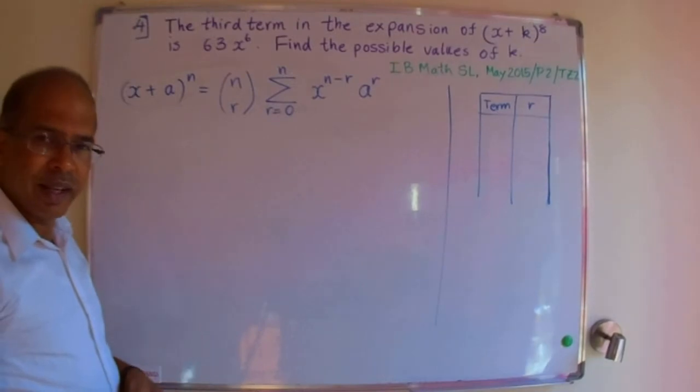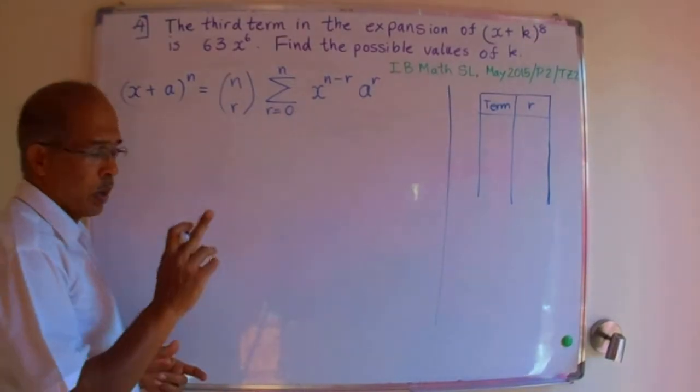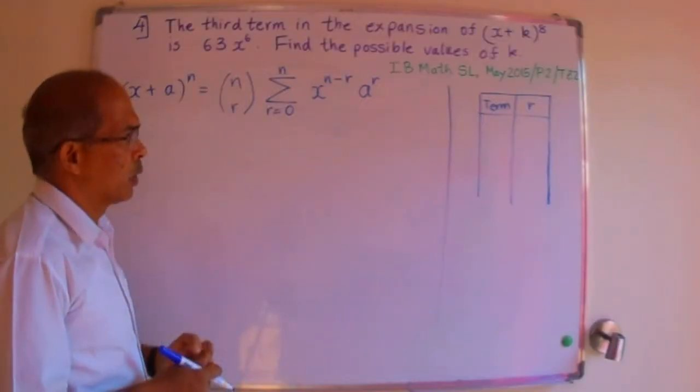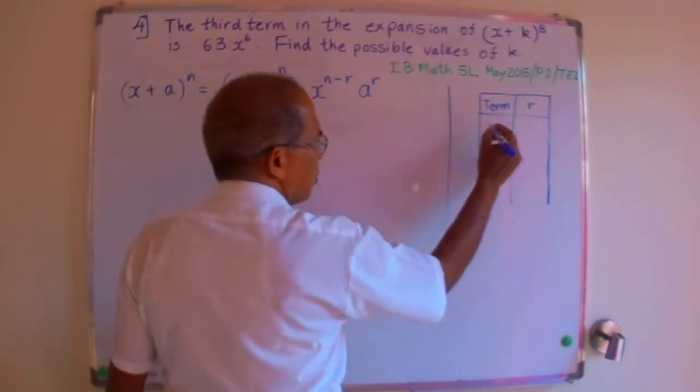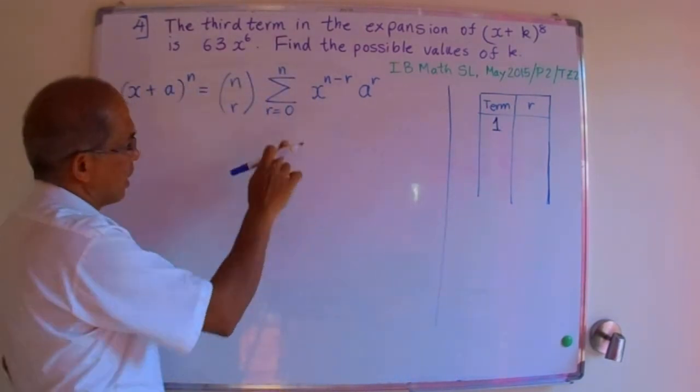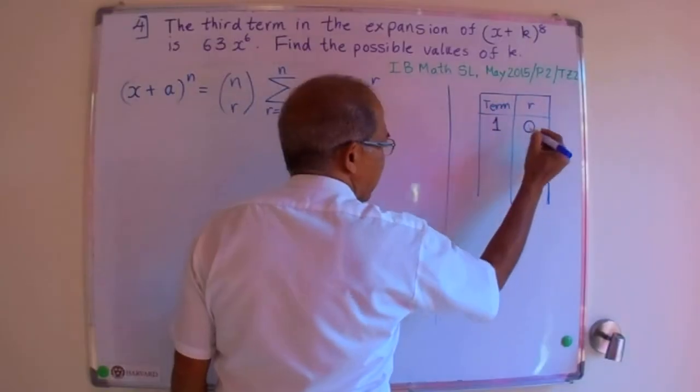Now just very quickly, let's understand this one aspect which is important to getting the right value of r to work with. So when you talk about the first term, what's the value of r? r, as you can see, starts with 0. So r will be 0.